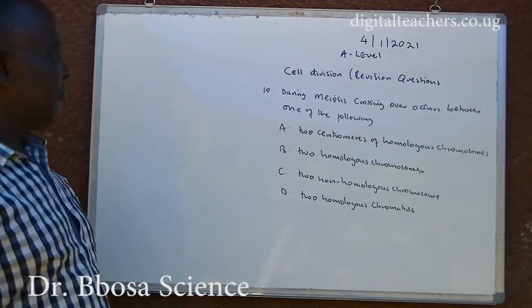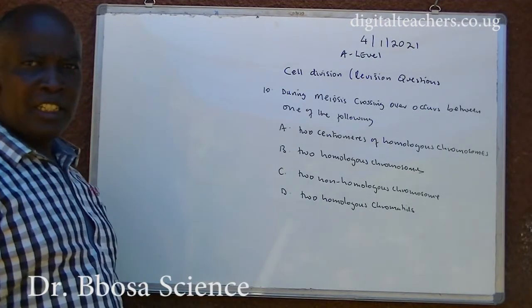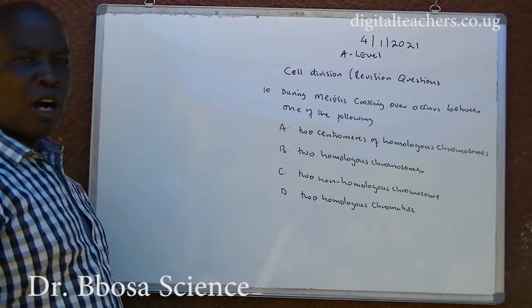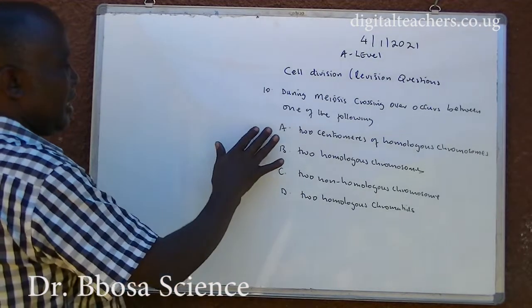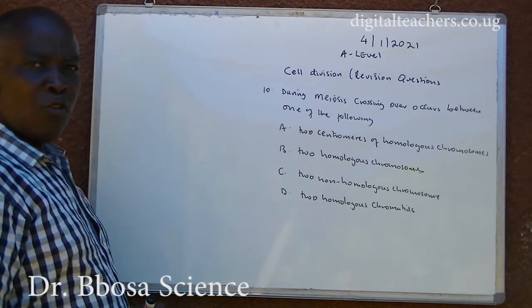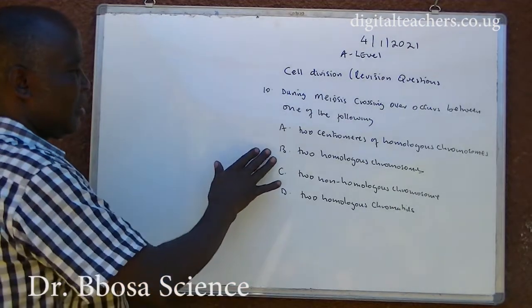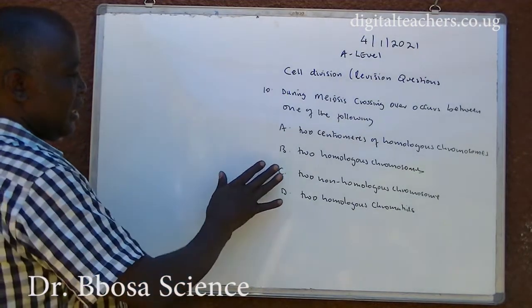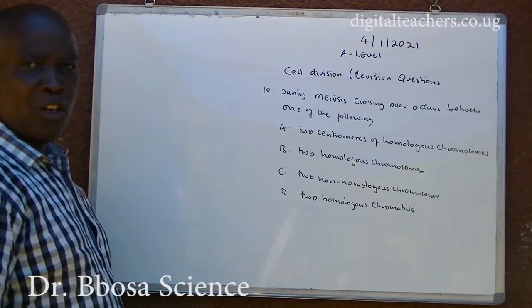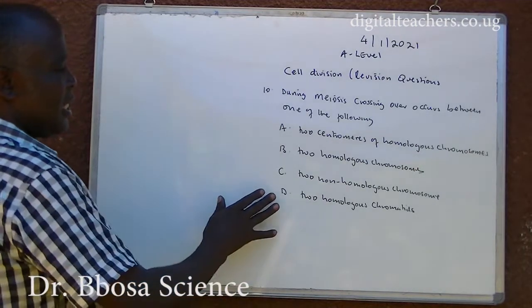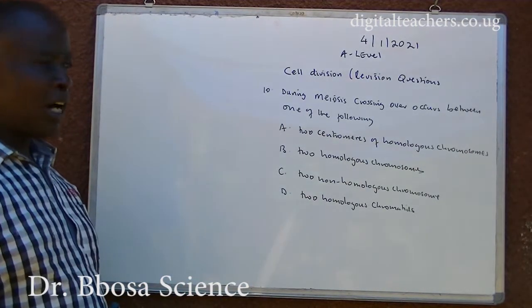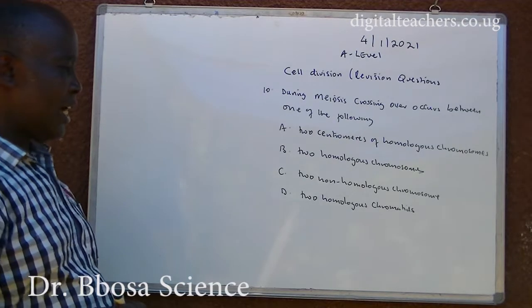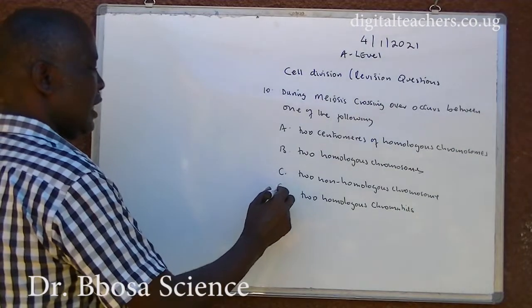Number 10. During meiosis, crossing over occurs between one of the following: A. Two centromeres of homologous chromosomes. B. Two homologous chromosomes. C. Two non-homologous chromosomes. D. Two homologous chromatids. You can pause and answer. The answer is D.